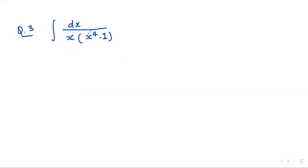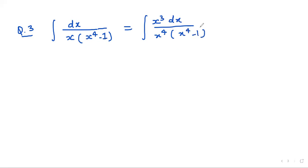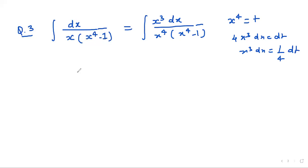Let us go to the next question: integration of dx upon x times x power 4 minus 1. Here we can multiply by x cube in the numerator and denominator. When x cube is multiplied to x, it becomes x power 4, giving x cube dx divided by x power 4 times x power 4 minus 1. Now we assume x power 4 equals t, then 4 x cube dx gives dt, so x cube dx equals 1 by 4 dt. This becomes 1 by 4 times the integration of dt upon t times t minus 1.